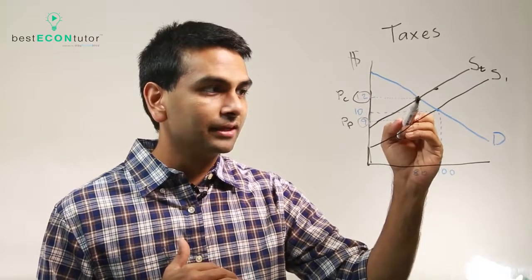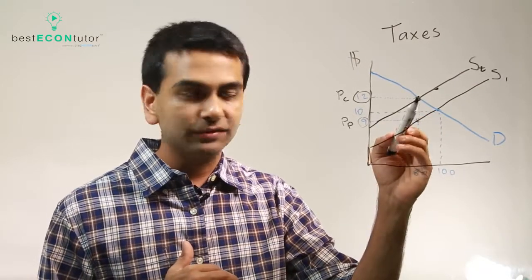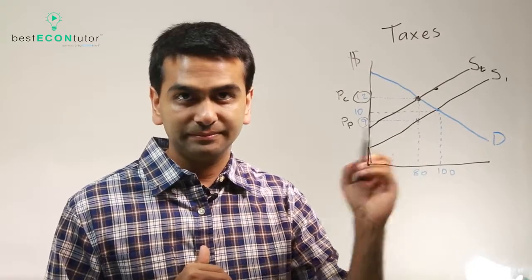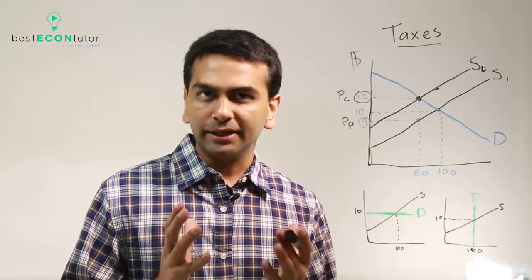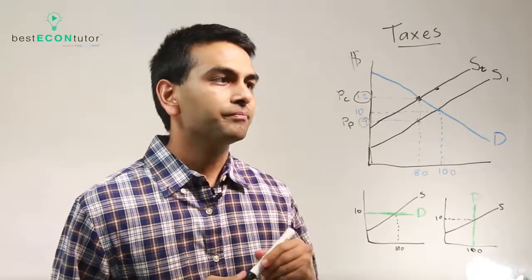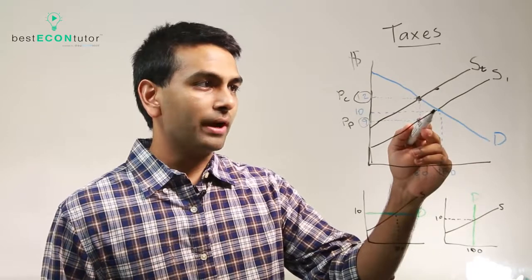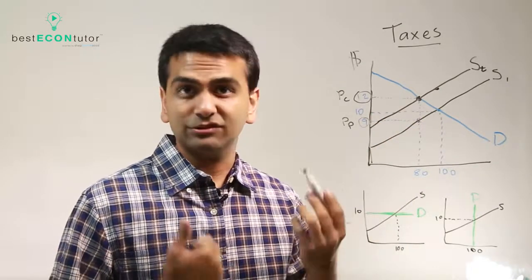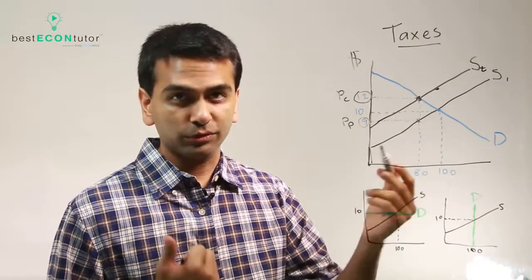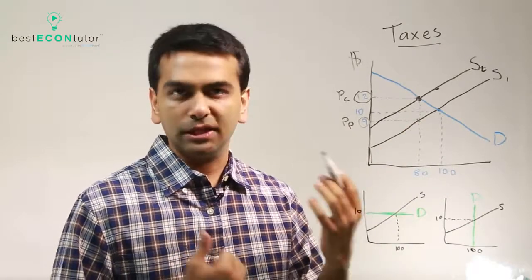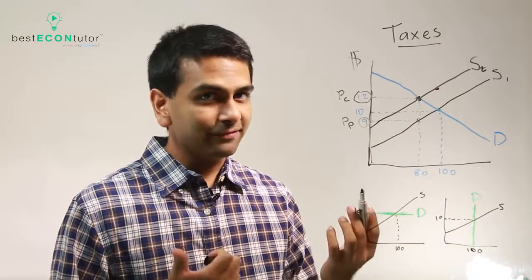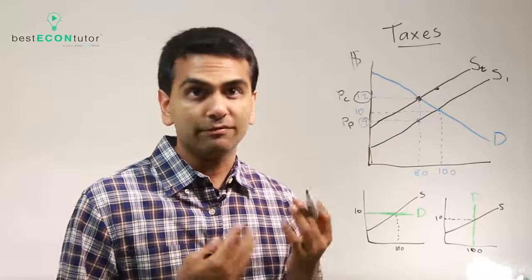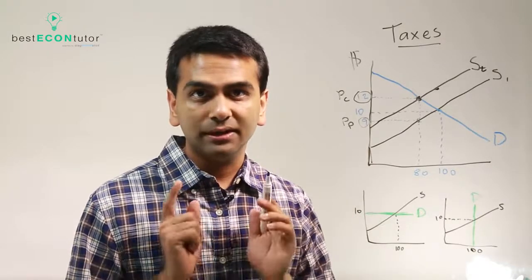So here, the consumers have a quantity of 80 and a price of 12, while the producers have a quantity of 80 and a price of nine. Looking at the burden of the tax: the price went up by two dollars for the customer, so that's their burden — two dollars out of the three dollar tax. The producer's burden was one dollar. Notice it wasn't equally split, and it doesn't have to be. How do we know who's going to have more of the burden? It's all based on elasticity.